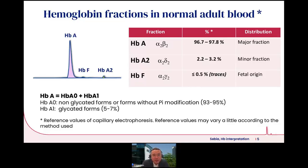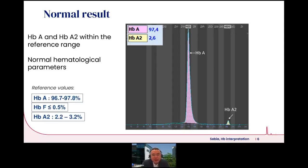In the normal adult, hemoglobin A is the majority population with a range of about 96.7 to 97.8%. Hemoglobin A2 is the minor fraction at 2.2 to 3.2%, and there are traces of hemoglobin F present. It's important to remember that hemoglobin A consists of both hemoglobin A0 and the glycated form A1. This is how results look in the capillary electrophoretogram.